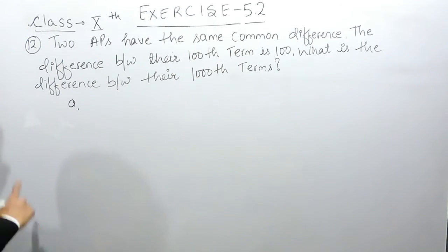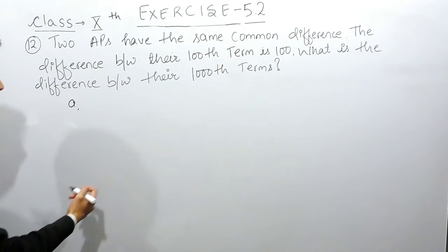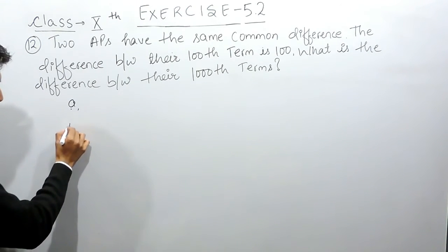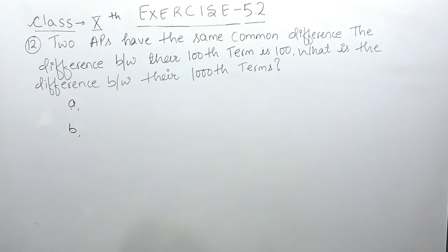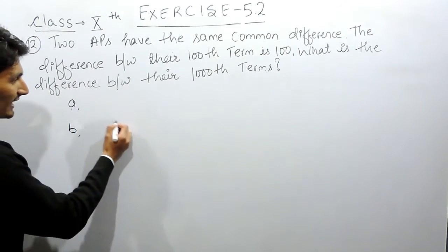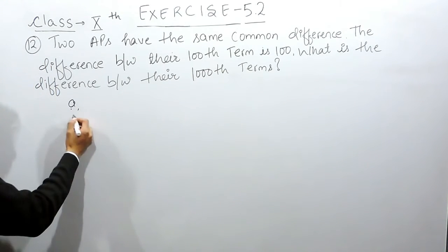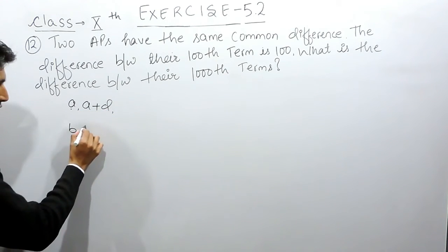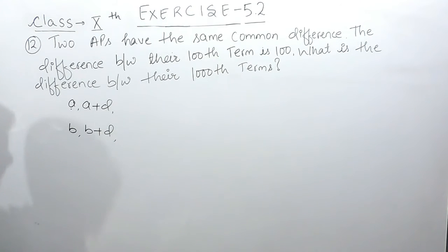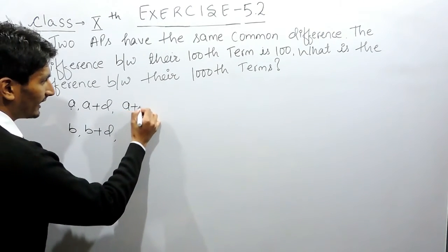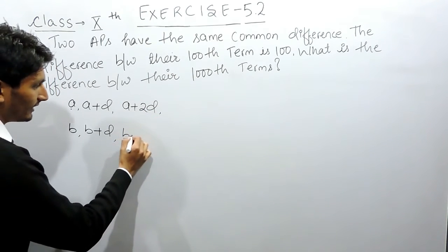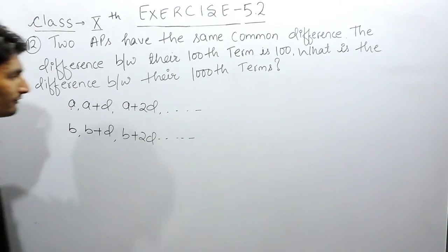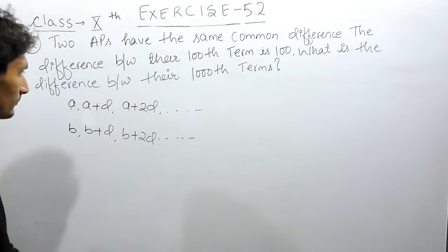Suppose the first term of the first AP is A and the first term of the second AP is B, and the common difference is the same D for both APs. We add the common difference D to both APs to form the sequence — adding D to the first, and similarly D to the second, and so on.